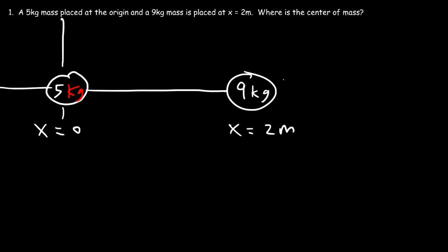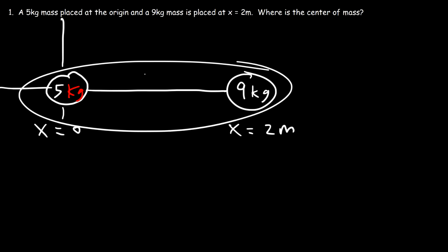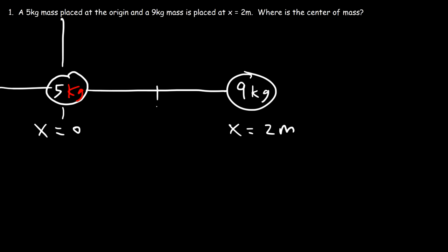The center of mass has to be somewhere between the 5 and the 9 kilogram mass. Is it going to be closer to the 5 kilogram mass or the 9 kilogram mass? The center of mass is going to be closer to the more massive object, so it should be somewhere between 1 and 2.